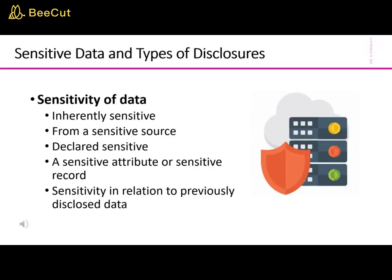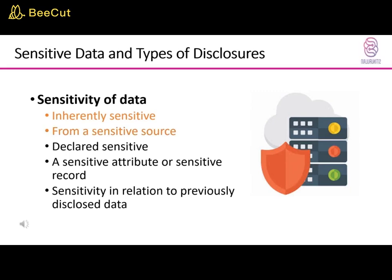Several factors can cause data to be classified as sensitive. First, inherently sensitive — the value of the data itself may be so revealing or confidential that it becomes sensitive, for example a person's salary or that a patient has HIV or AIDS. Second, from a sensitive source — the source of the data may indicate a need for secrecy, for example an informer whose identity must be kept secret.